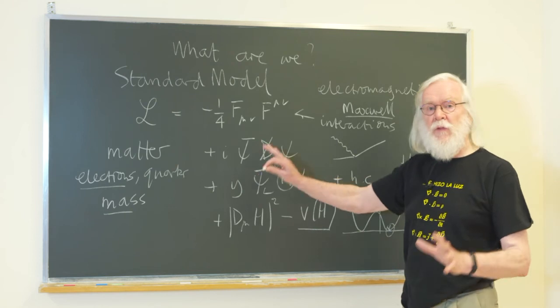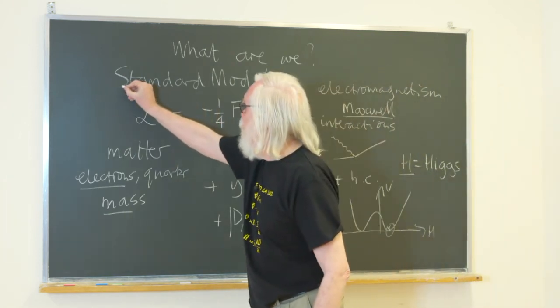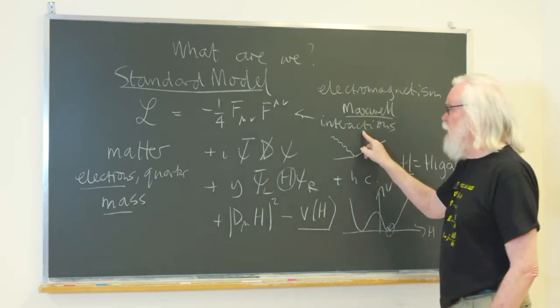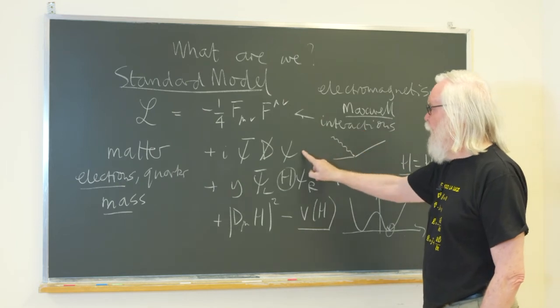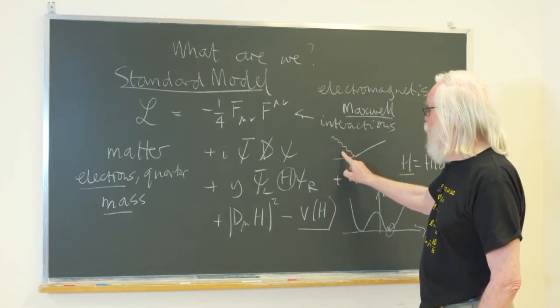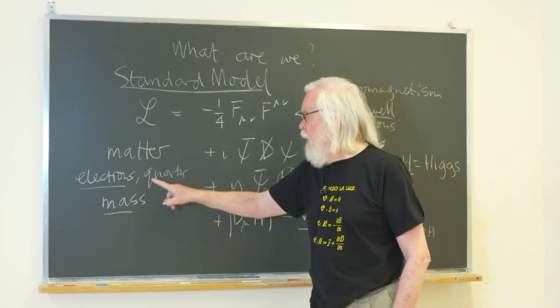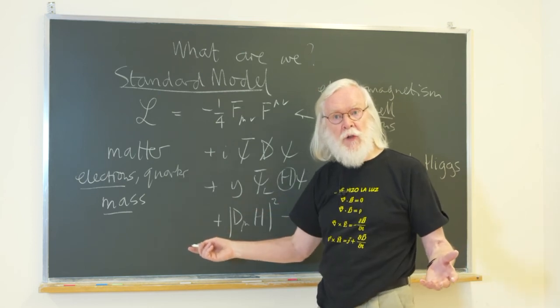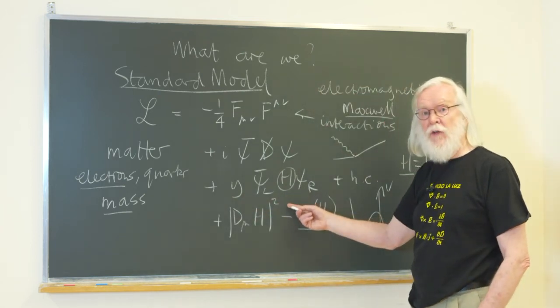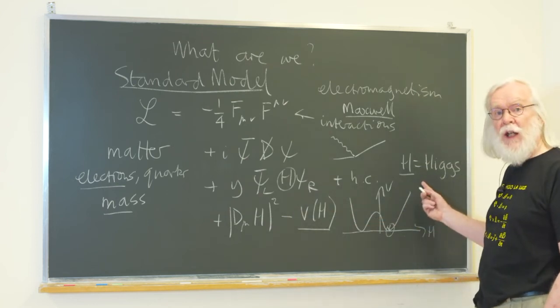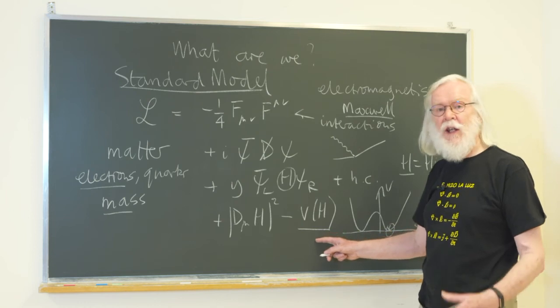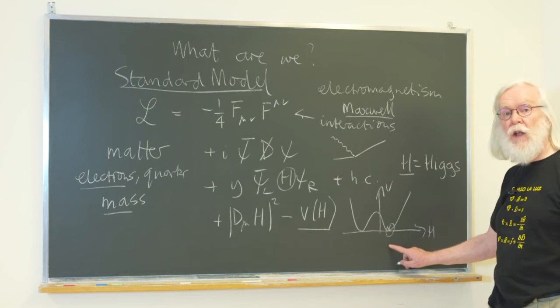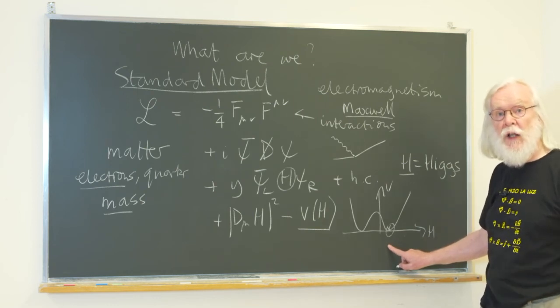So here you have it, the basic equation describing the standard model. A line which describes the fundamental interactions. A line which describes how those interactions work on the fundamental particles of matter like electrons and quarks. Where do the masses of those particles come from? They come from the third line of this formula. That is where Mr. Higgs comes in. This is what I call the engine room of the Higgs. This is what generates this value of the Higgs field throughout all space. It gives masses to the elementary particles.